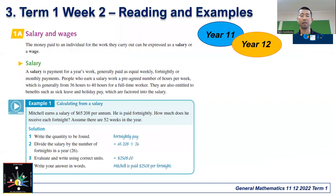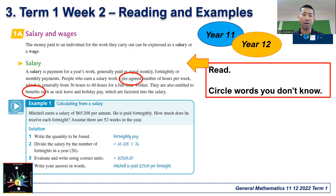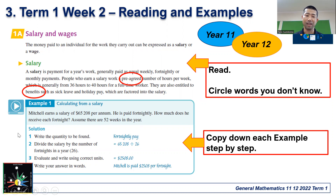So how are you going to do your work? Here's an example from the year 11 textbook — section 1A, salary and wages. There's a part which you are going to read carefully, and also circle any words you don't know, and then we'll break it down once you come back. Each section also has examples, and I want you to copy down each example step by step. We will provide you with pencils and paper, so copy down exactly as it is in the textbook.